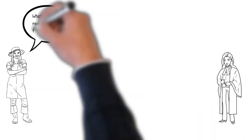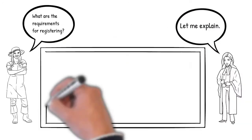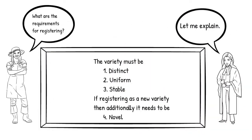The next question is: what are the conditions for a plant variety to qualify for registration? The requirements to be met are — it needs to be distinct, uniform, stable, and if it is a new plant variety, it needs to be novel. Distinct means it is clearly distinguishable by at least one essential characteristic from any other known variety at the time of filing the application. Uniform means there must be no variations in the essential features in propagation. Stable means its essential characteristics remain unchanged after repeated propagation or at the end of each cycle. Novelty means such a plant must not have been sold before filing an application for registration. This requirement applies only to a new plant variety registration.